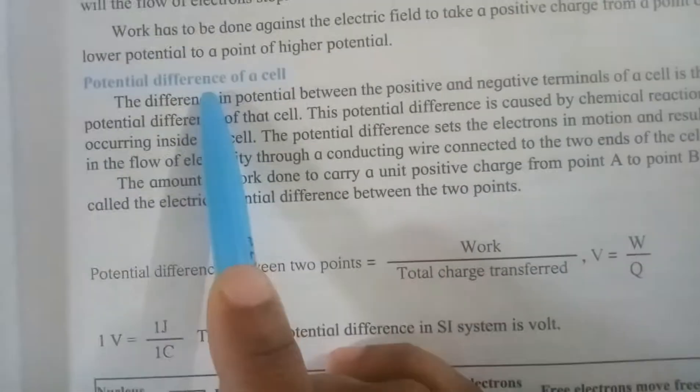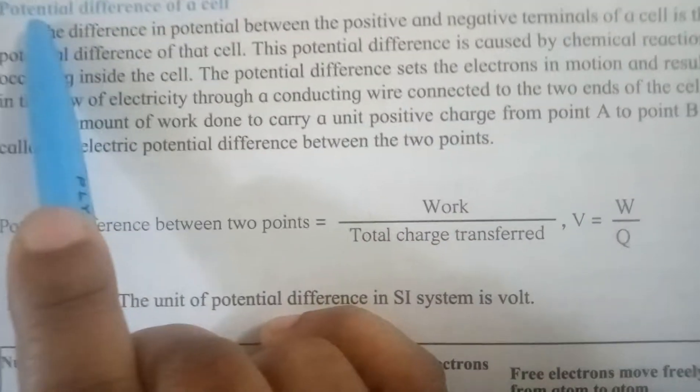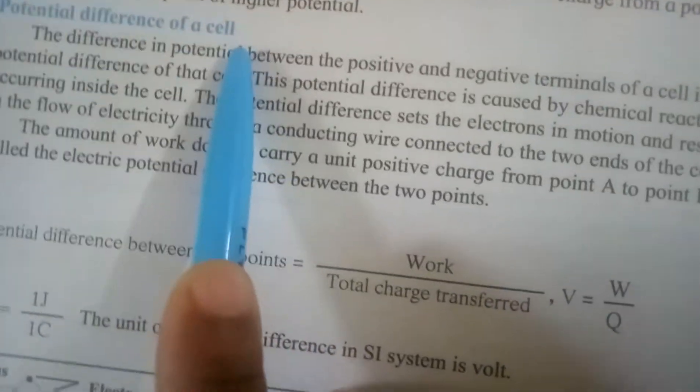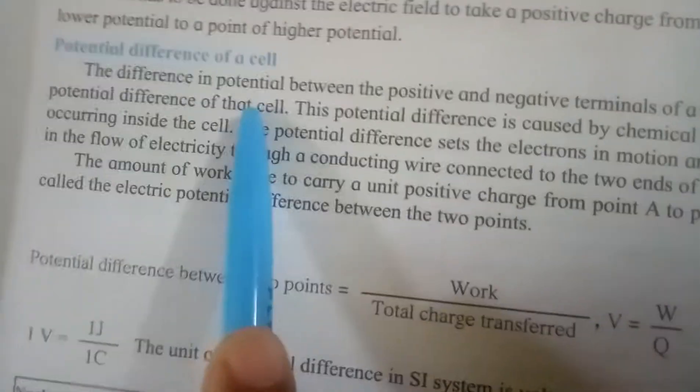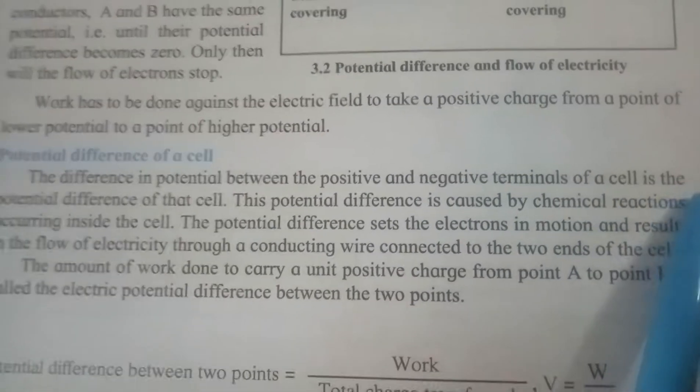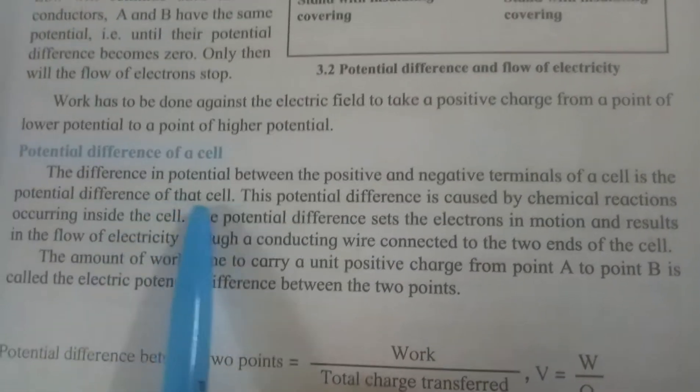So students, today we are going to learn about the potential difference of the cell. The difference in the potential between the positive and negative terminal of a cell is the potential difference of that cell.